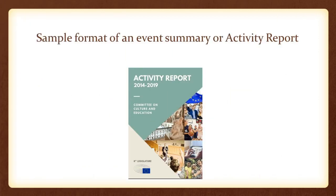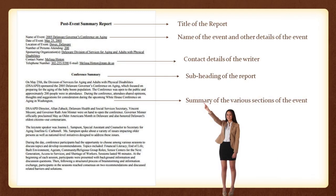Now, let us take a look at the sample format of an event summary or activity report. This is a short post-event summary report of a conference. If you look at the entire format, on the top is the title of the report. Then there is an information section where the name of the event, the date of the event, location of the event, number of persons attending, and sponsoring organization are all mentioned. The contact name, number, and email of the writer of the summary is also mentioned in that section, post which there is a subheading called conference summary.